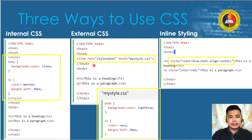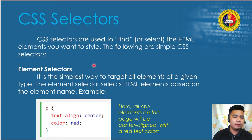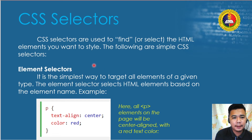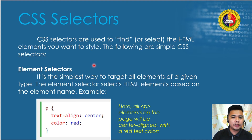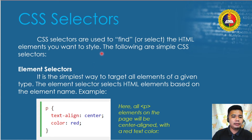Since external CSS is the most practical method, this is what we'll be using from this point on. Now that we know how to connect our CSS file to our HTML file, we need CSS selectors so that all formatting applied in CSS will work on our HTML. CSS selectors are used to find or select the HTML element you want to style.